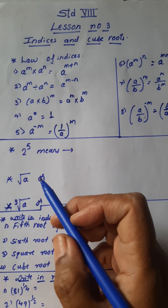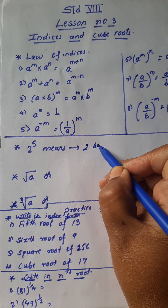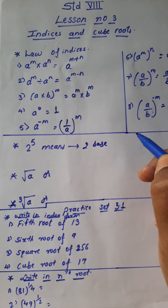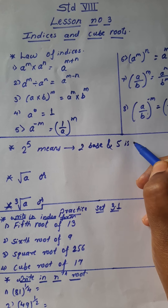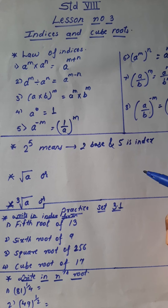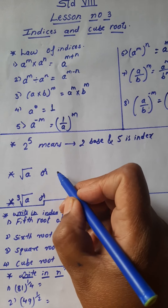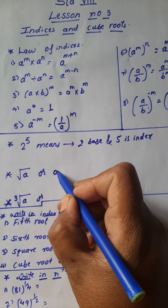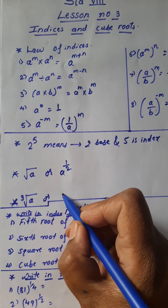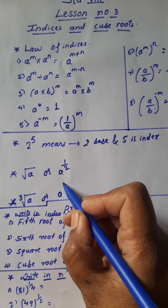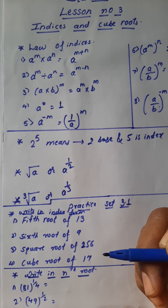Next, what is 2 raised to 5? Here 2 is the base and 5 is the index. Next, the square root of a — we write this as a raised to 1 upon 2. The cube root of a — we write this as a raised to 1 upon 3.